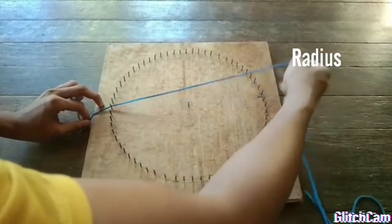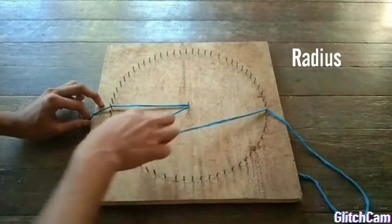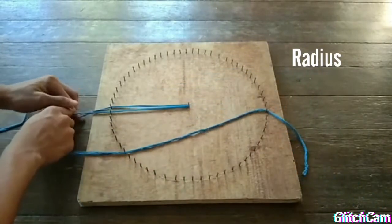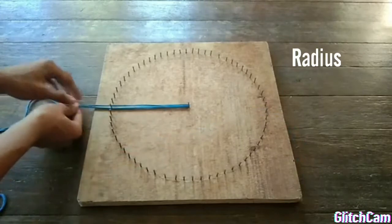Next is radius. It is any of the line segments from its center to its perimeter. Also, radius is half the diameter.